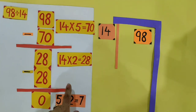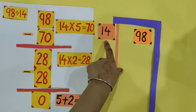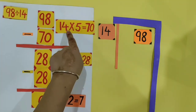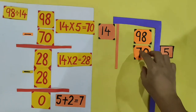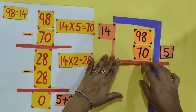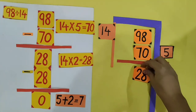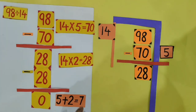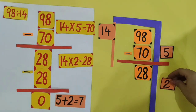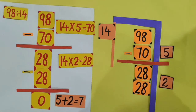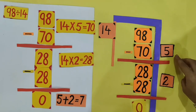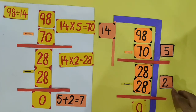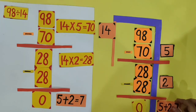Now we write the non-standard method in division form. 98 is divided into 14 equal parts. First, I divided 14 notes of 5 rupee: 14 into 5 is equal to 70. How many rupees are left? 98 minus 70 is equal to 28. Then I divide 14 notes of 2 rupee: 14 into 2 is equal to 28. 28 minus 28 is equal to 0. First we divided 14 notes of 5 rupee, then 14 notes of 2 rupee. 5 plus 2 is equal to 7.